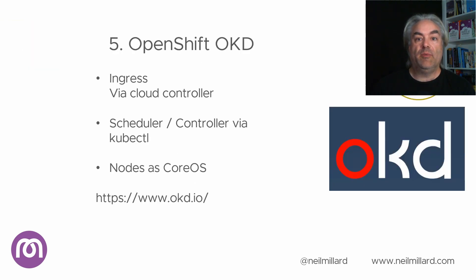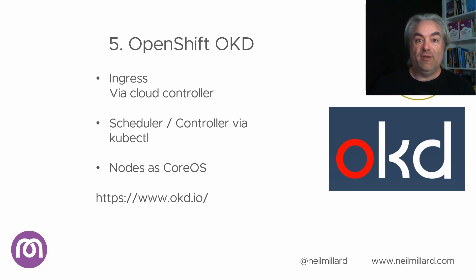The last one on our list is OKD, the upstream project for OpenShift — the open source version. This is, in effect, a management layer on top of Kubernetes itself. It's all open source, all Kubernetes under the hood, but it provides an extra number of helpers, like the cloud controller. The main difference is that the nodes you have to provide and manage are running CoreOS — a rather cut-down version specified just for running Docker and little else, which makes it very good at this task. Everything else is handled through an API or command line, and it always has to be set up by you. If you want the support option, that obviously comes with cost.